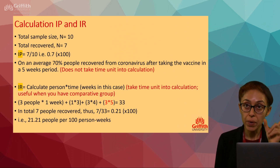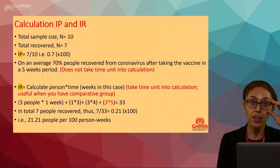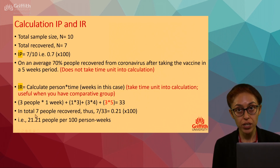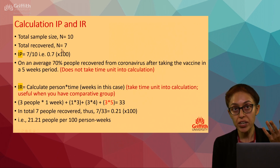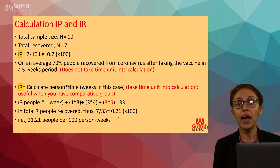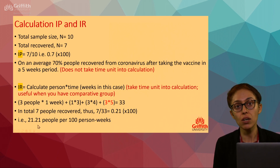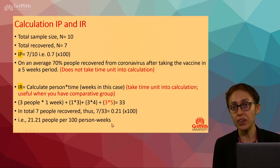Seven people recovered in total — the same fact used in incidence proportion. So incidence rate = 7 ÷ 33 = 0.21. Multiply by 100 and the answer is 21.21. The unit of expression is '21.21 persons per 100 person-weeks,' which is how recovery rate would appear in a research paper.